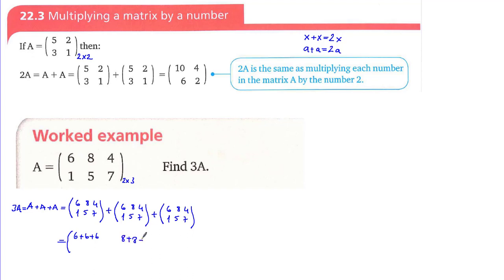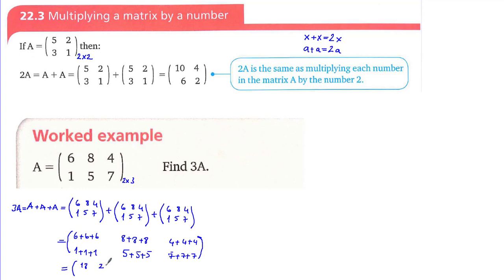Continuing: 1 plus 1 plus 1, 5 plus 5 plus 5, and 7 plus 7 plus 7. The resultant matrix is going to be 18, 24, 12, 3, 15, and 21. This result is equal to 3A.